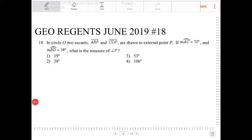In circle O, two secants, A, B, P, and C, D, P, are drawn to external point P.